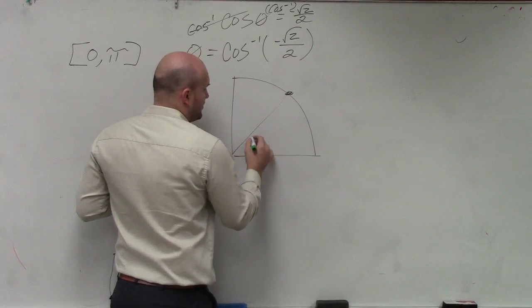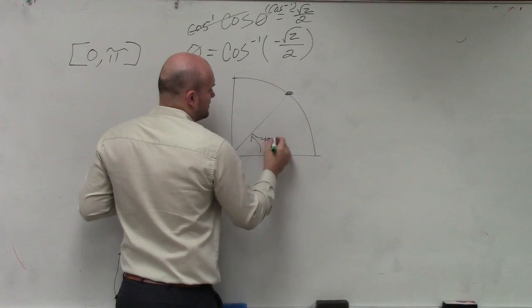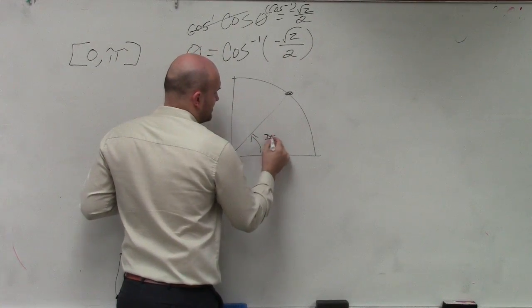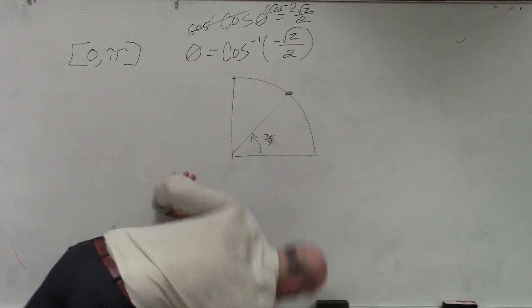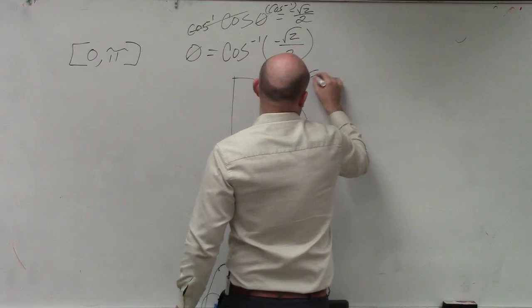So here, 45 degrees or π over 4, sorry, π over 4 gives you the x-coordinate square root of 2 over 2.